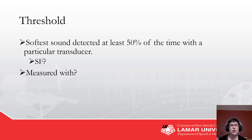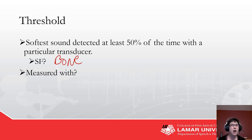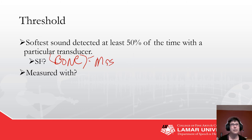Let's define threshold. Threshold is the softest sound that you can detect at least 50% of the time with a particular transducer. Most transducers are ear specific. Sound field is not — sound field is the better ear, and so is bone. Bone is also not ear specific, but it can be made ear specific by masking.